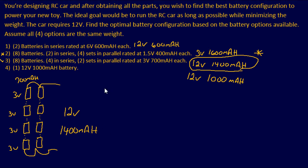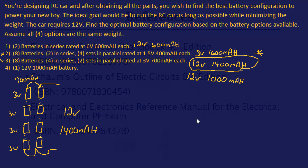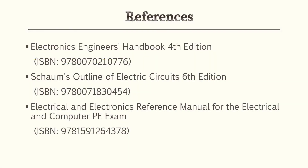Understanding how to manipulate battery configurations is important — knowing what happens when batteries are placed in parallel versus series. Just like source transformation with current and voltage sources, the behavior differs depending on configuration. This gives you the foundation needed to analyze battery circuits effectively.